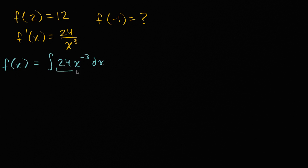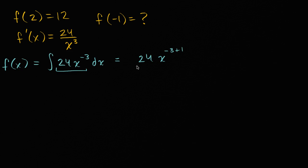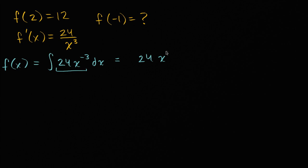What is the anti-derivative of 24x to the negative three? We're just going to do the power rule in reverse. We're going to increase the exponent by one, so it's going to be x to the negative three plus one. Then we divide by that increased exponent, negative three plus one. So that gives us x to the negative two divided by negative two.